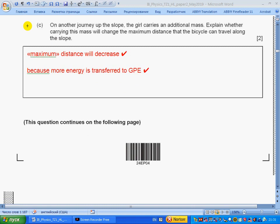Part iii: On another journey, the girl carries an additional mass. Explain why carrying this mass will change the maximum distance the bicycle can travel along the slope. Our statement is that maximum distance will decrease. Reason: due to conservation of energy, the electrical energy that we have should turn into potential energy. But potential energy equals mgh, so more mass means less height, so less distance.